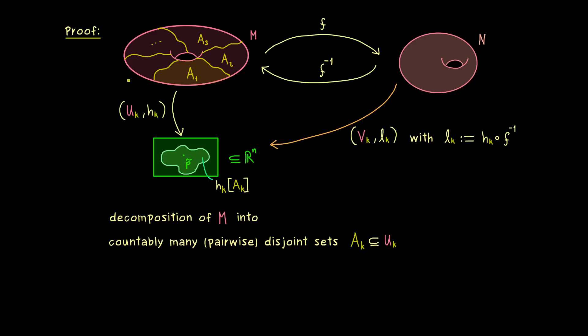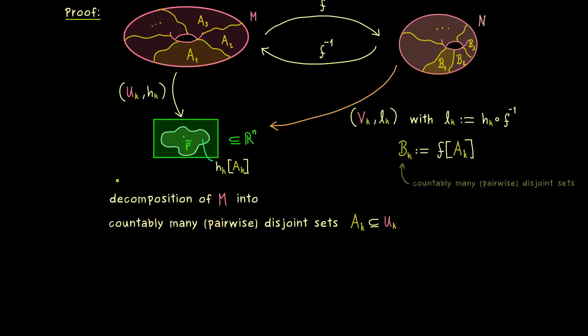Moreover, now we can also consider the images of the sets Ak under f. And indeed these give us a decomposition of the manifold N. And maybe a good name would be B1, B2, and so on. So the definition is quite simple, Bk is just the image of Ak. And since we have our one-to-one translation, we also know that we have pairwise disjoint sets on the right-hand side. And moreover the union of the Bk's also has to be the whole manifold N. And with that we have everything, because now we can prove the change of variables just for such a set Ak and Bk. Because then in order to get the whole integral, we just have to sum everything up.